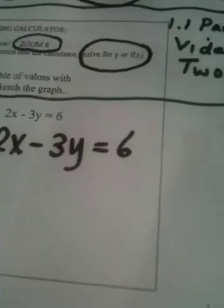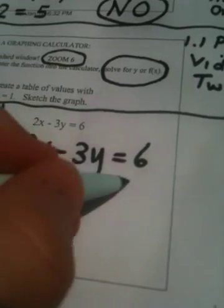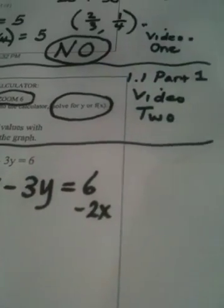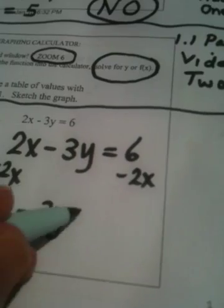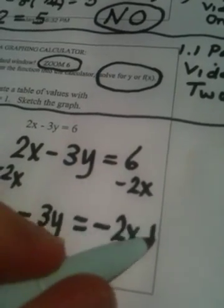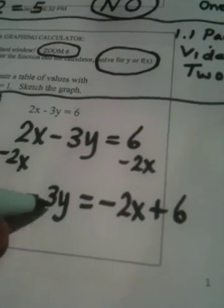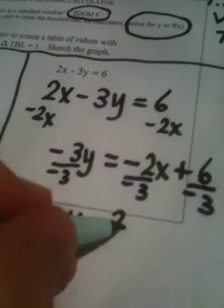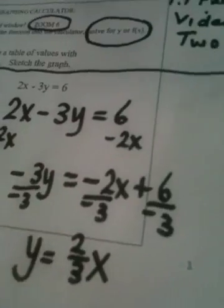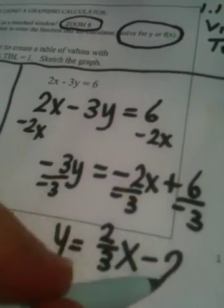Now this equation has to be solved for y. So the first thing we do is subtract 2x from both sides. Dogs, behave. So I have negative 3y equals negative 2x plus 6. You with me? And now we divide by negative 3. Everything gets divided by negative 3. So we have y is equal to 2 thirds x and 6 divided by negative 3 is negative 2.